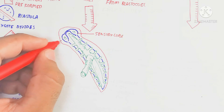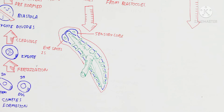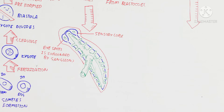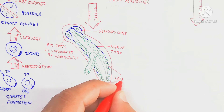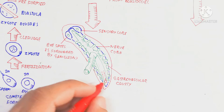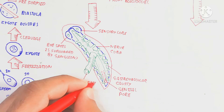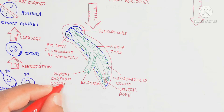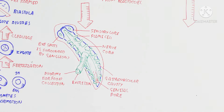Phylum Platyhelminthes is acoelomate — it does not contain a coelom. Planaria is an important example. It has a sensory lobe, and its ice-spot photoreceptors detect light. It is surrounded by ganglia, so the central nervous system is well developed. Flame cells are used for the excretory system. The gastrovascular cavity and genital pore are present. Excretion occurs through the pharynx, which is also used for food collection.